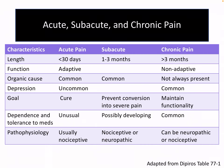Now let's talk about the differences between acute, subacute, and chronic pain. Acute pain lasts less than 30 days, subacute pain is between one to three months, and chronic pain is greater than three months. We're going to focus on the extremes — acute pain and chronic pain first — and then talk about subacute pain, which is kind of a waystation between acute and chronic pain.